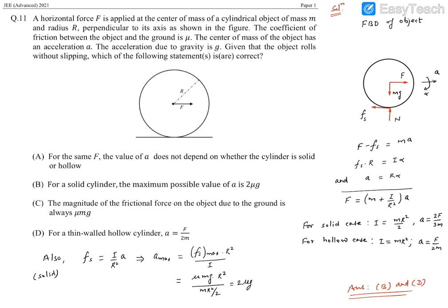We need to draw the free body diagram of the object and write the forces. External force F, gravitational force, normal force, and friction will be in the backward direction.